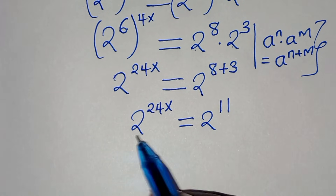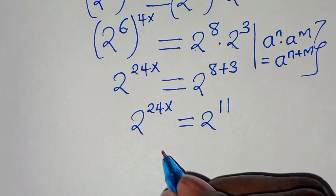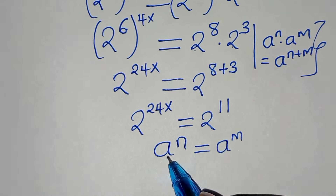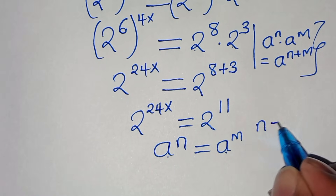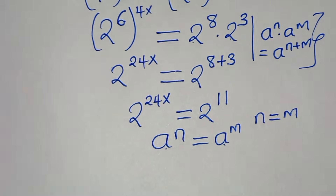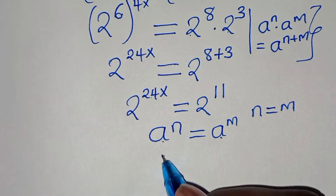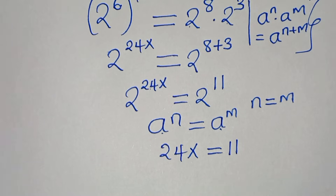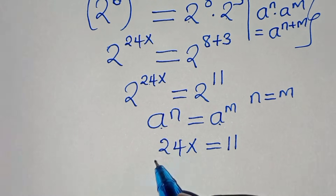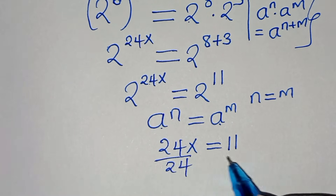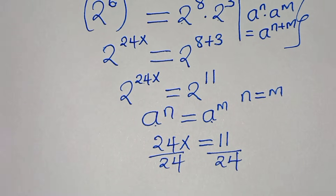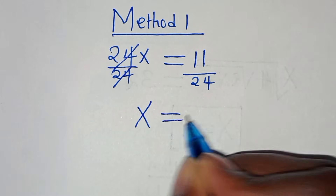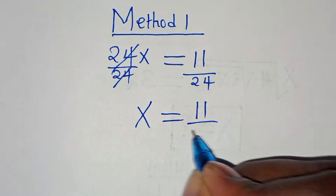Since the bases are common, using the rule that if a to the power of n equals a to the power of m then n equals m, we get 24x equals 11. Dividing both sides by 24, and simplifying, the value of x equals 11 over 24.